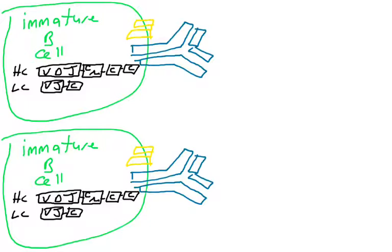But this B cell receptor, we don't know if it's good or not. And by good, I mean that antigen binding site that became created because of the VDJ gene rearrangement and the junctional diversity. Is that antigen binding site going to harm us?